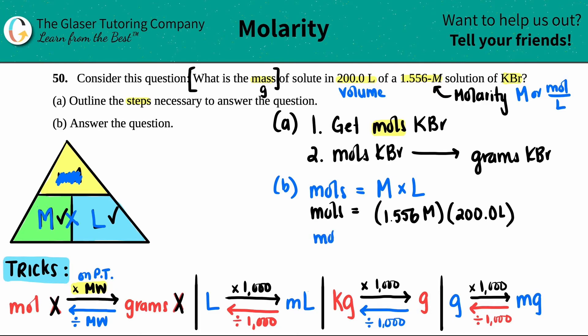Moles equal 1.556 times 200. We both have four sig figs in both of them. So we should have four sig figs. So we have 300. Wow. That's a crazy amount of moles, 311.2 moles of KBr. Now the first step is done.